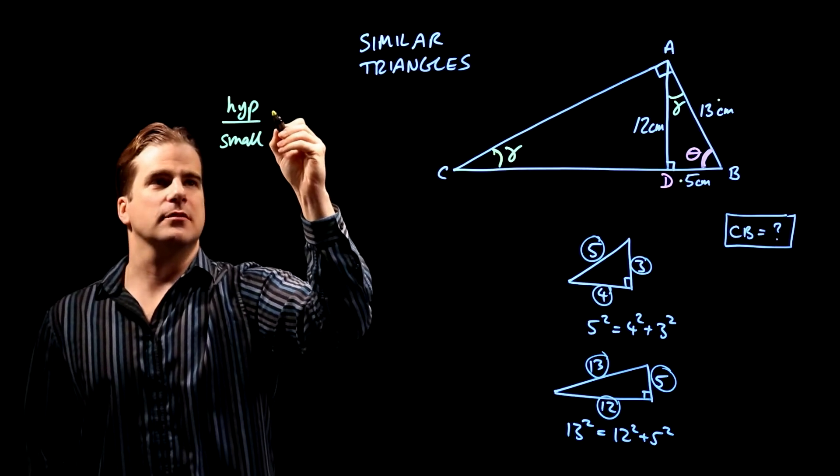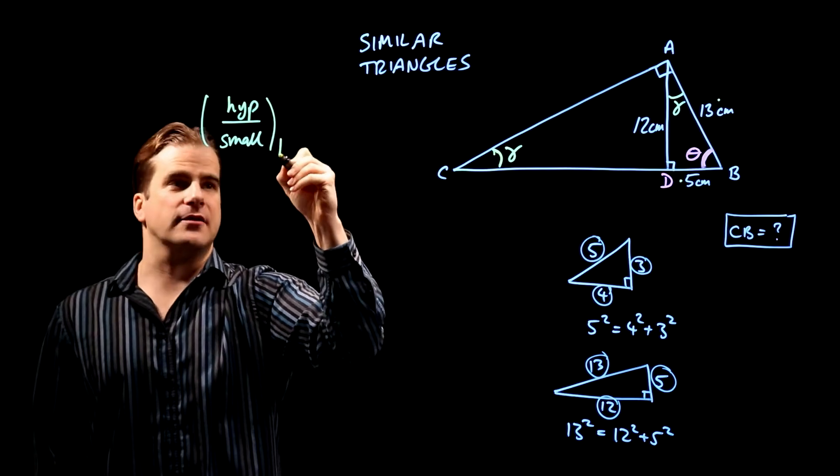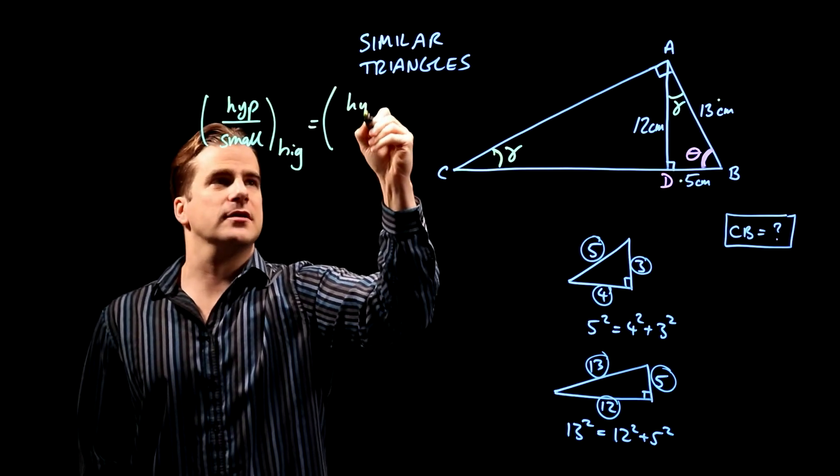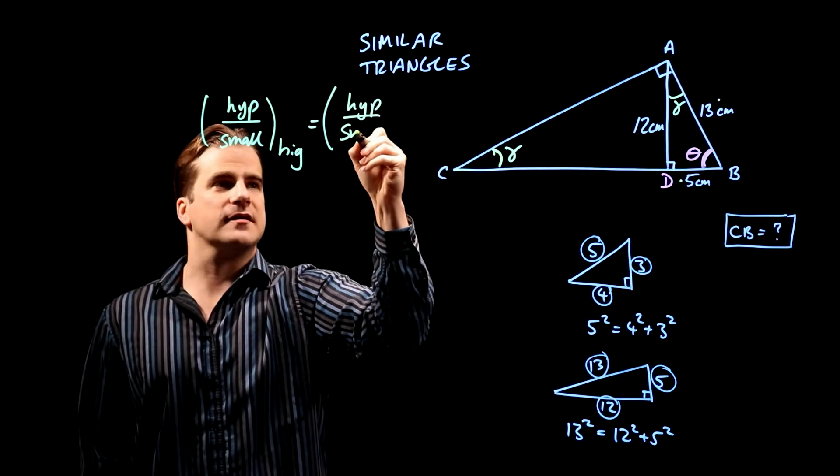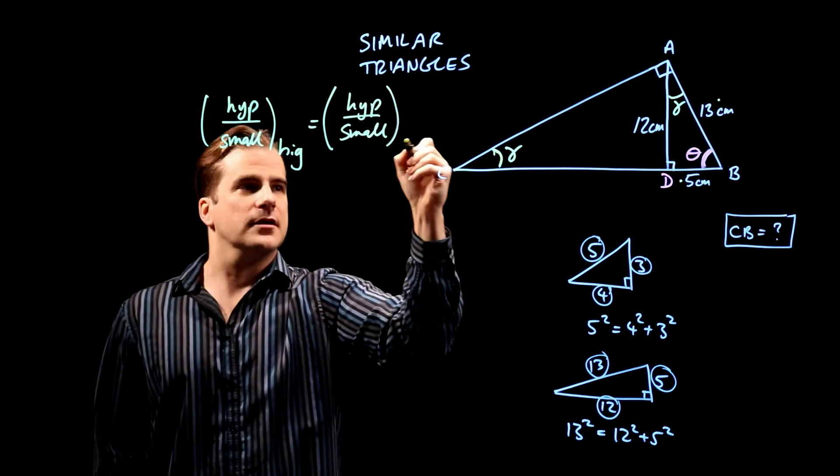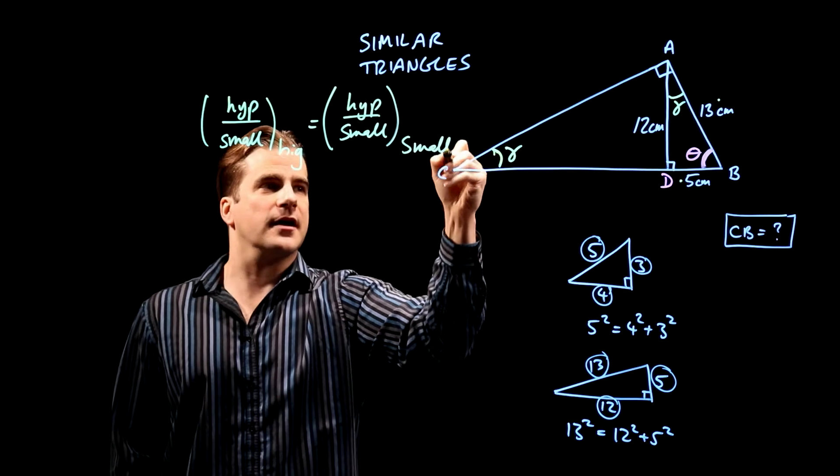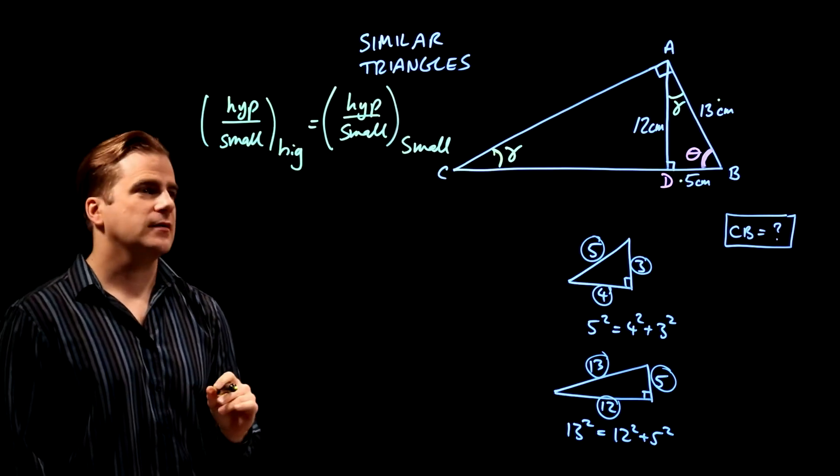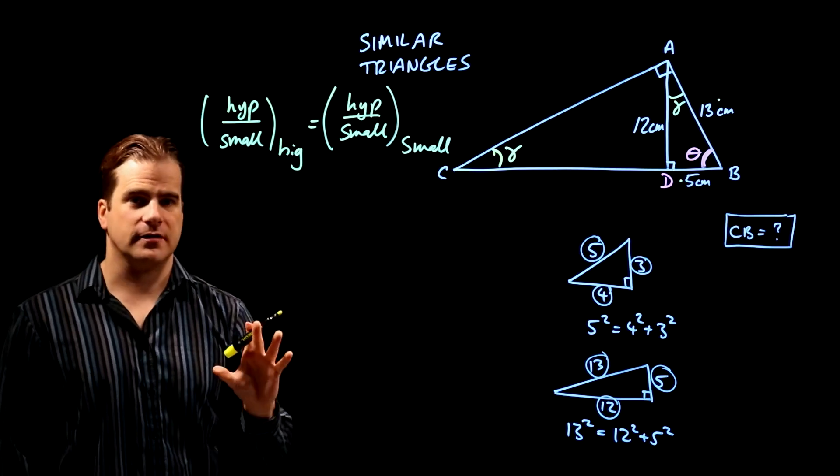The ratio of the hypotenuse to the smallest side for the big triangle is exactly the same as the ratio of the hypotenuse to the smallest side for the small triangle. That's a property of similar triangles. So that's what we're going to use to solve this problem.